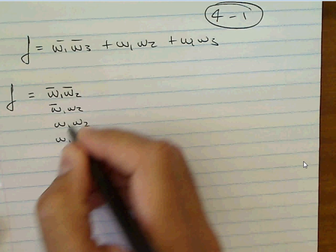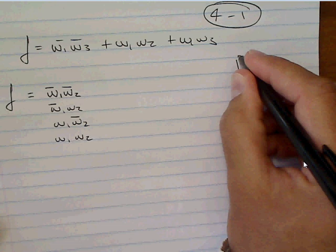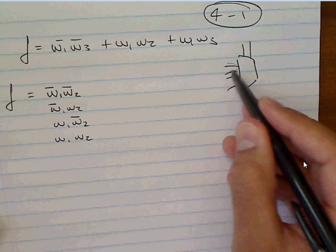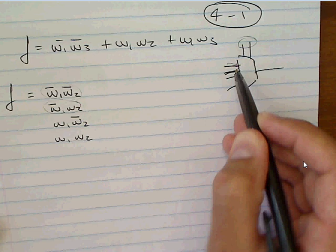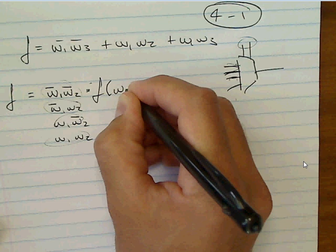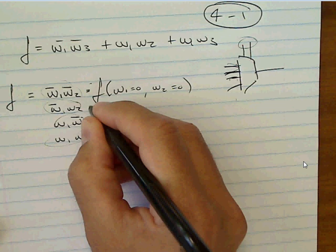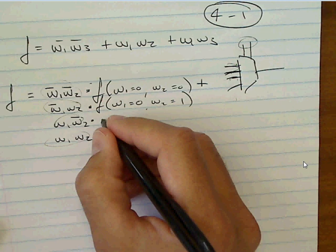A 4-to-1 multiplexer has four inputs, one output, and two select lines determining which input is chosen: 00 selects the first line, 01 selects the second, 10 selects the third, and 11 selects the fourth. Shannon's expansion for two variables ANDs each combination's selection term with F evaluated at that combination: NOT W1·NOT W2 AND F(W1=0,W2=0), OR NOT W1·W2 AND F(W1=0,W2=1), OR W1·NOT W2 AND F(W1=1,W2=0), OR W1·W2 AND F(W1=1,W2=1).